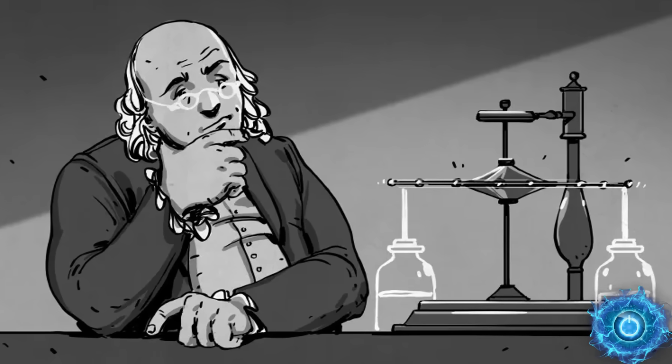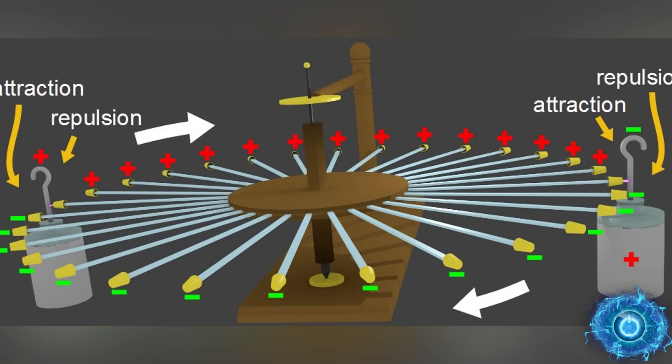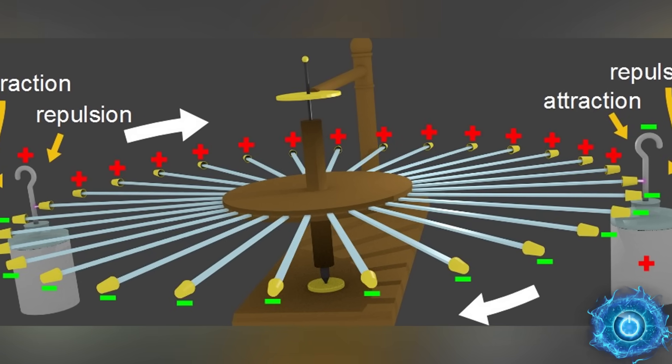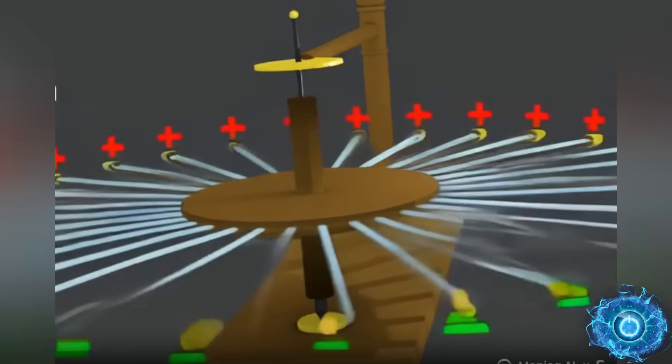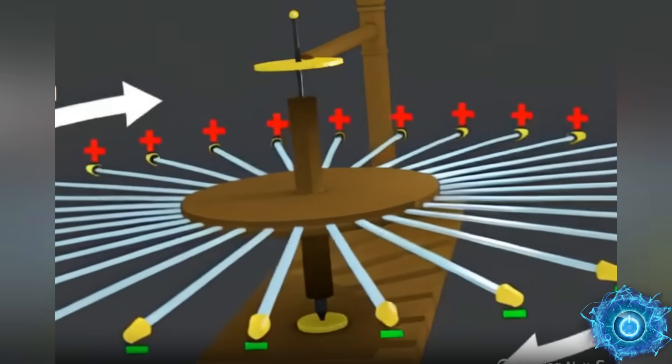100 years before the modern electric motor, Benjamin Franklin revealed the electrostatic motor. It works on the principle of attraction and repulsion between charged surfaces. Leyden jars would alternate between positive and negative charges, and this would rotate the thimble capacitors.